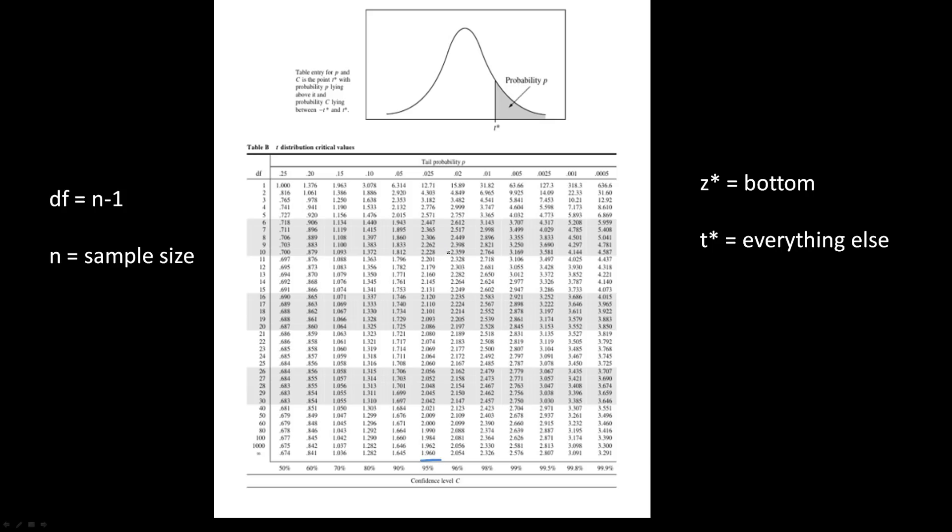Now for T star values, it's a bit more complicated. You have to look at the rest of the values, and you basically have to play a little bit of battleship as you try to line up your degrees of freedom, or DF over here, and your confidence level. So how exactly do you find your degrees of freedom? You just take your sample size and you subtract by 1. So for example, if you had a sample size of 20, then your degrees of freedom is 19.